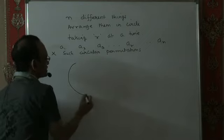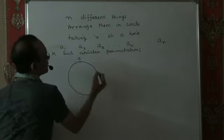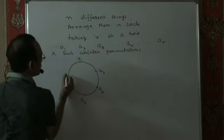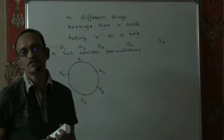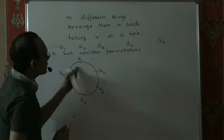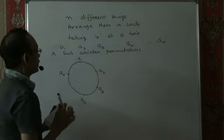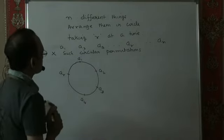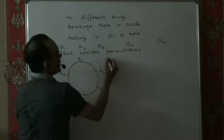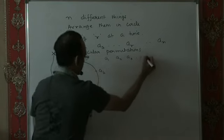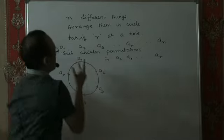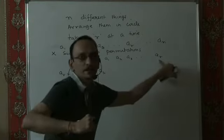One of these x circular permutations is, say for example, a1, a2, a3, a4, aR. Now, what I could have done is cut this circle at a1 and I would have got a linear permutation — say a1, a2, a3, aR. If I cut this circle at a1 and straighten the circle, I would have got a linear permutation.